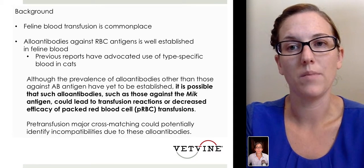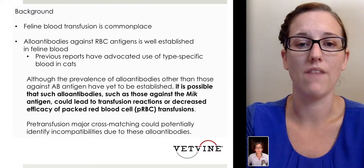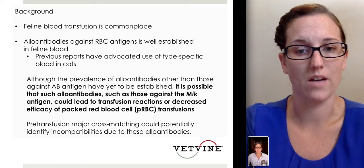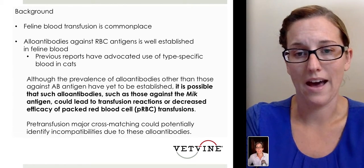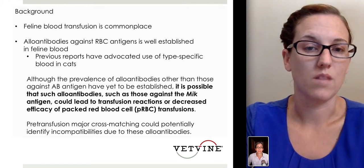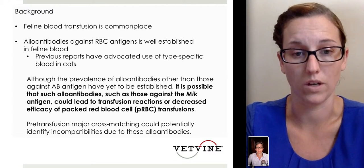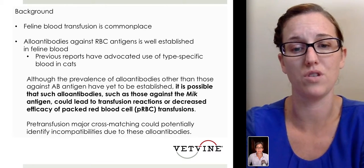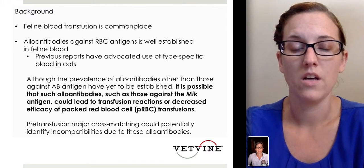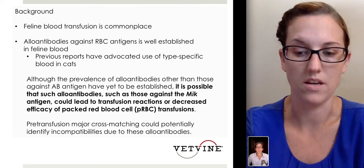The problem arises when we come across a cat that does not have the MYC antigen on the red cell — they're going to have alloantibodies already developed. So we could have a cat that's never had a previous transfusion, is a type A cat, and gets type A blood, but if they lack the MYC antigen, they may start to have a hemolytic reaction. Pre-transfusion major cross-matching could potentially identify these incompatibilities not found on our traditional AB blood type kits.